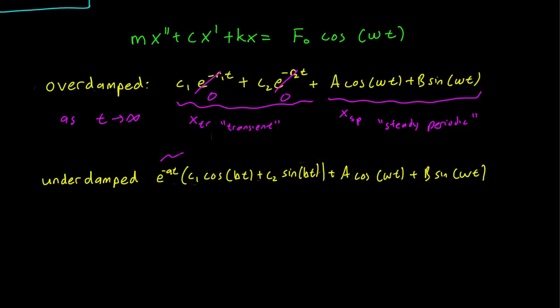Again, the homogeneous solution will be transient — as t goes to infinity, the e^(−at) term goes to 0, which eliminates the entire homogeneous portion, and we are left with the steady periodic solution that consists of cosine and sine.